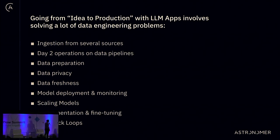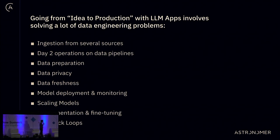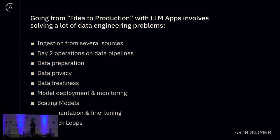Tracking data lineage — knowing where data comes from and where it flows — is important. Data freshness and timeliness matter too: you don't want your model predicting answers based on data from September 2021. We want real data from yesterday or today. Model deployment and monitoring, scaling to more data sources, experimentation, fine-tuning, and feedback loops are all challenges. Prototyping is easy; making it production-ready requires careful thought.